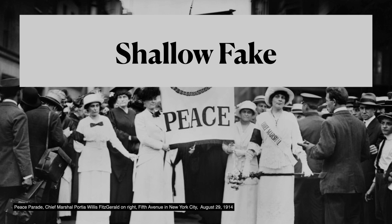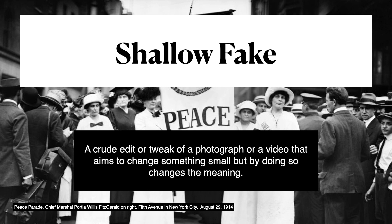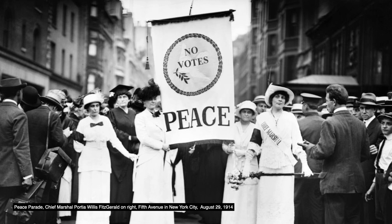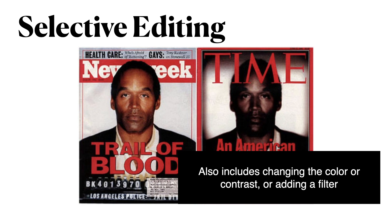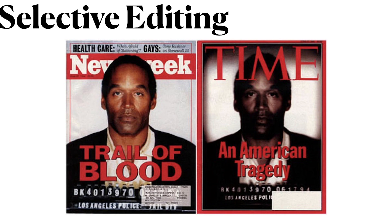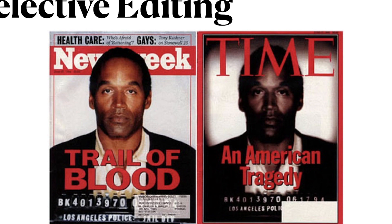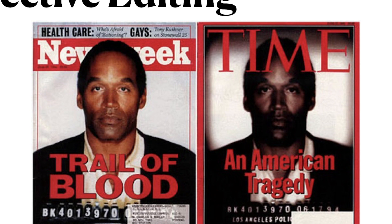There are also shallow fakes and selective editing — more crude edits or tweaks to photographs or videos that aim to change something small, but by doing so, change the meaning. For example, did you know there was a subset in the suffragette movement that only protested for peace and often included not allowing women to vote for a greater good of unity? Just kidding — that sign was made in Photoshop. Selective editing also includes changing the color, contrast, or adding a filter — like in these examples of OJ Simpson on the covers of Newsweek and Time during his murder trial. When the covers were placed side by side on newsstands, the public immediately noticed that Time's cover had darkened Simpson's skin. The selective edit changed the meaning and interpretation many had of the image — basically, that OJ would look more like a murderer if his skin was darker.